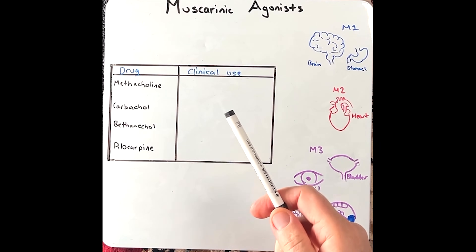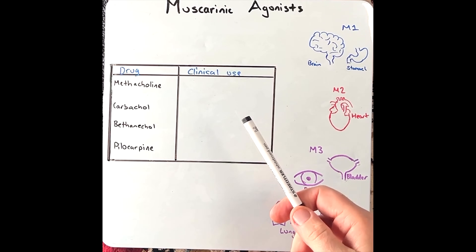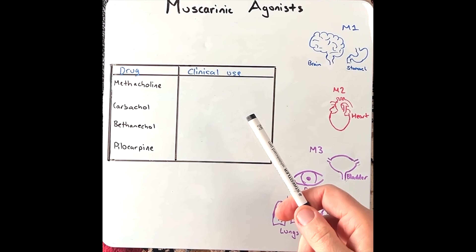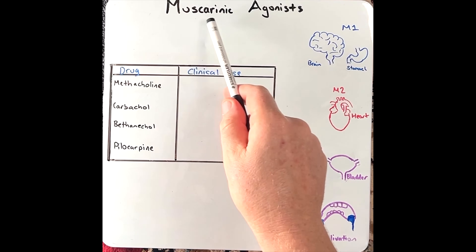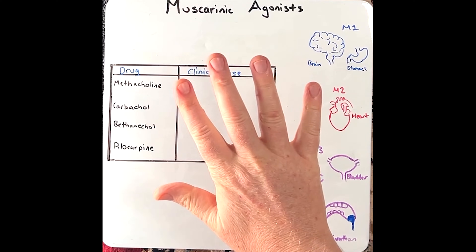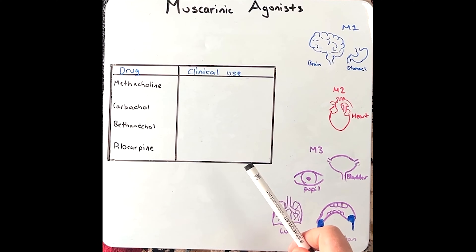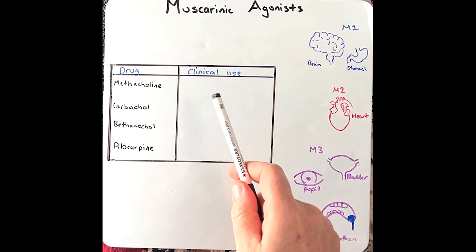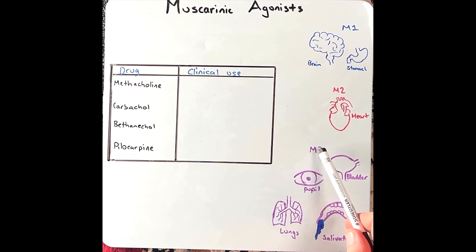Muscarinic agonists are parasympathomimetic drugs, which means they mimic the action of acetylcholine on the parasympathetic receptors, specifically muscarinic receptors. There are five subtypes of muscarinic receptors, titled M1 all the way to M5. However, from a clinical standpoint, M1, M2, and M3 are the most important.